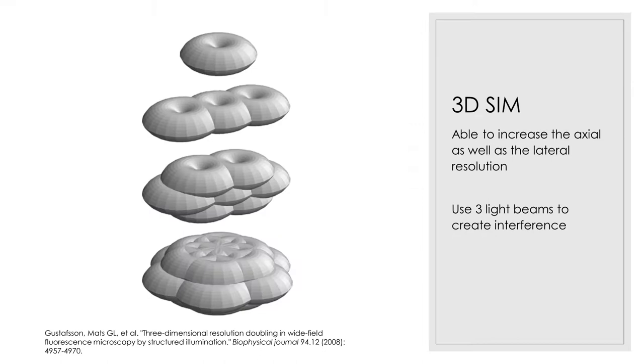Up until 2008, SIM was only able to double the resolution in 2D. In 3D, it hadn't been done because of a problem called the missing cone of information. This top image shows the 3D version of the 2D Fourier space shown in the last diagram. And you can see the dip in the middle where the axial resolution cannot be increased because of out-of-focus light being detected from other layers in the sample. In 2008, Gustafsson et al., pioneered a way to also increase the axial resolution and experimentally built the first ever 3D-SIM microscope.